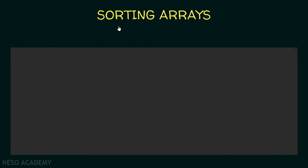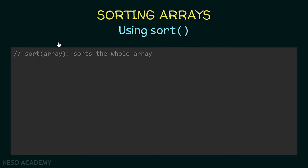Let's get started with sorting. Suppose that you want to sort an array in an increasing order. Then we are going to use the sort method of the arrays class. We can use the sort method and pass an array as a parameter. Using the method like this, it's going to sort the whole array.